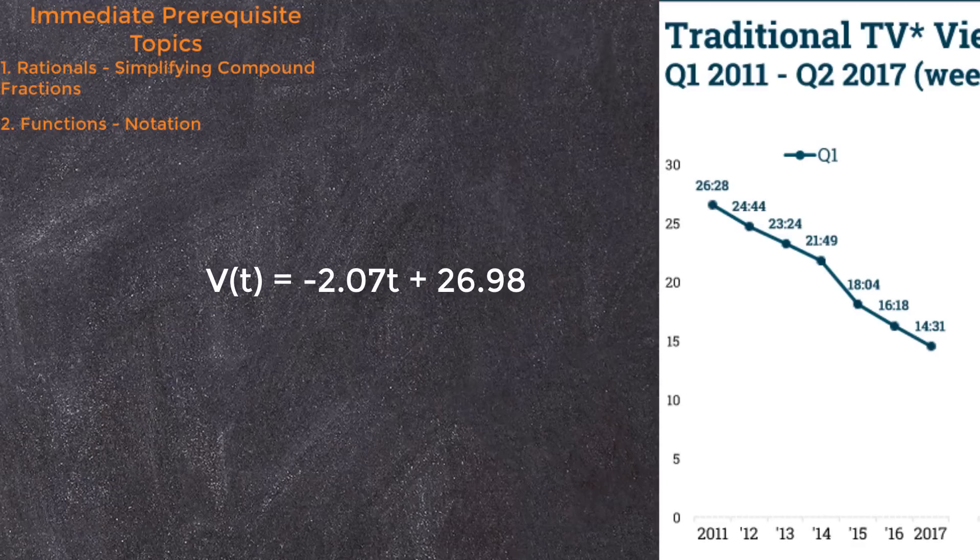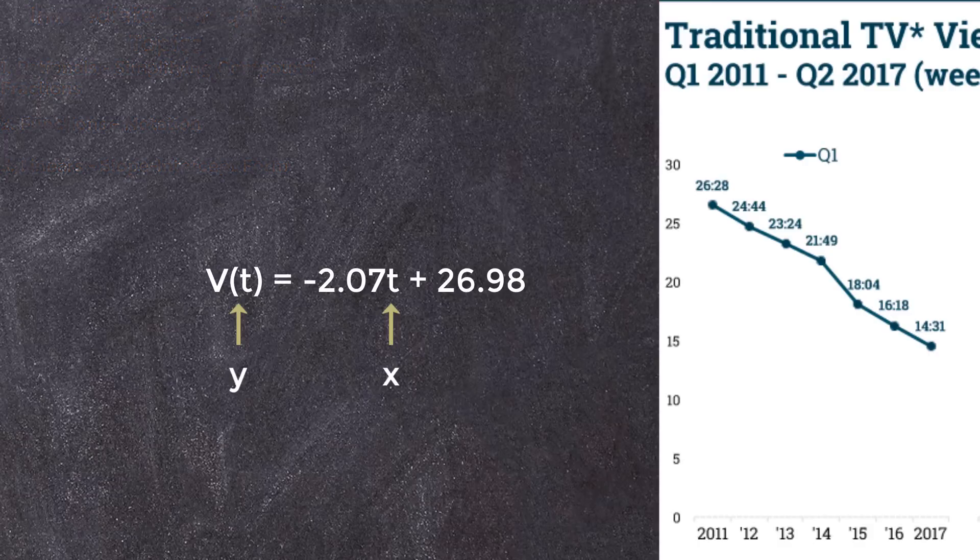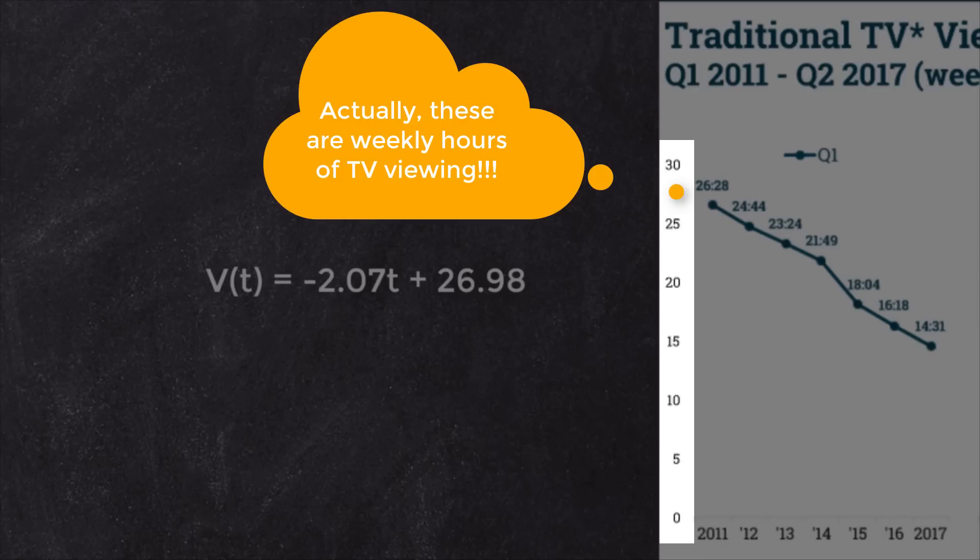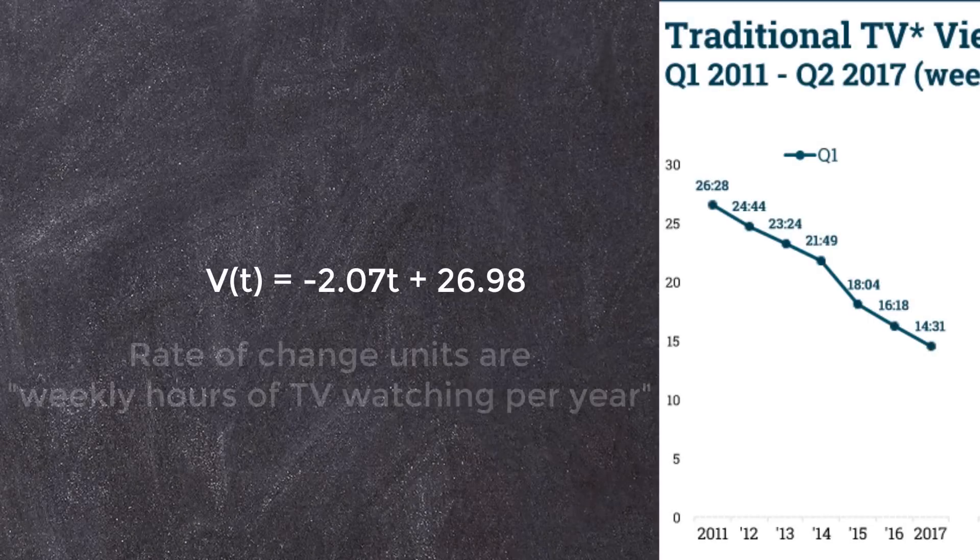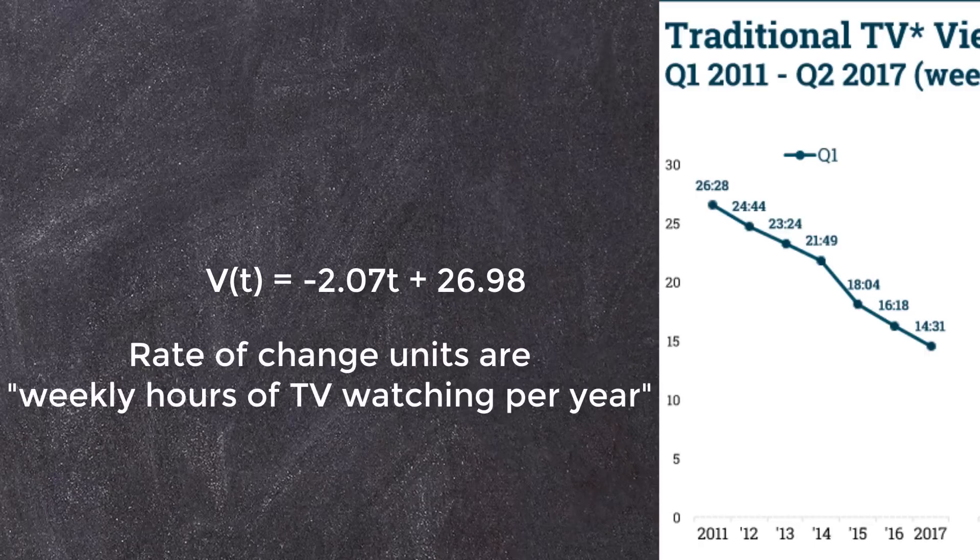Diving into this, this function has the form of a linear equation in slope intercept form. In this case, y is replaced by the function named v of t, x has been replaced by t, the role of the slope is being played by negative 2.07, and the intercept is 26.98, and I should say it's the vertical intercept not just the intercept. Since slope is rate of change we can say that the rate of change of this function is negative 2.07. However, this is just a number without meaning if we leave it at that. Instead, let's look at the units of the vertical and horizontal axes. Now they don't quite say it, but the vertical or rise units are hours of TV watching and the horizontal or run units are the years.